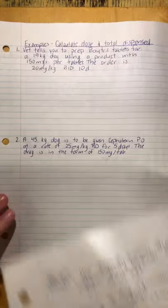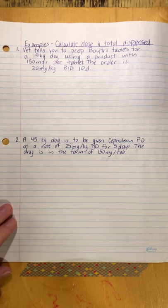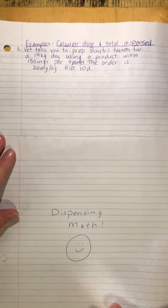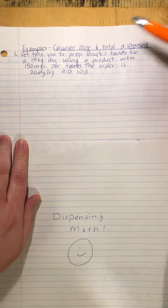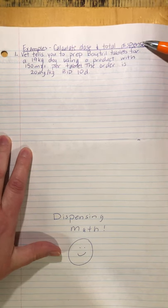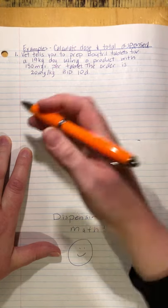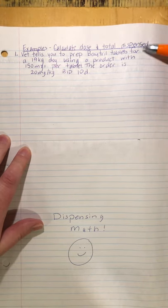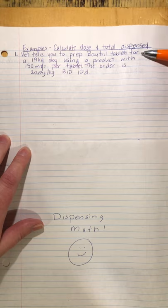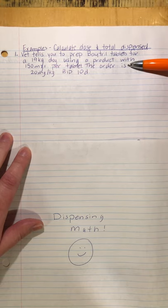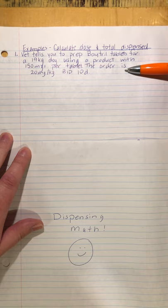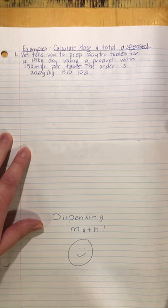Let's do our first example. We want to calculate the dose and total dispensed. The vet tells you to prep Baytril tablets for a 19 kilogram dog using a product with 150 milligrams per tablet. The order is 20 milligrams per kilogram BID for 10 days.